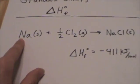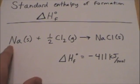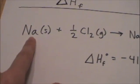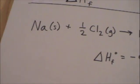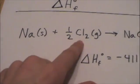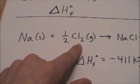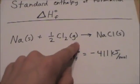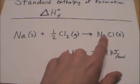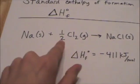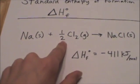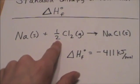So sodium is in its standard state — meaning what's its naturally occurring state? Well, it's normally a solid; remember it's a metal on the periodic table. And chlorine — we know it's a diatomic element, that's its natural state, and it's a gas. Since we can only form one mole, we actually use one half, or a fraction.